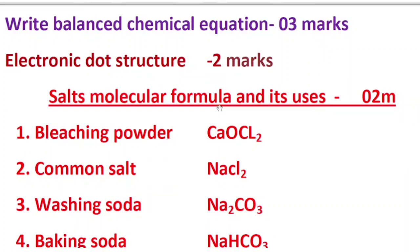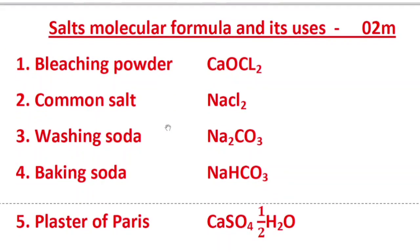The next very very important topic is salts — molecular formula and its uses. In the state level and the model question paper it is there for two marks. You should learn the chemical formula along with the uses of the salt. For example: bleaching powder is CaOCl₂, washing soda is Na₂CO₃, baking soda is NaHCO₃, plaster of Paris is CaSO₄·½H₂O. Molecular formula carries one mark and uses carries one mark, so you can easily score two marks.